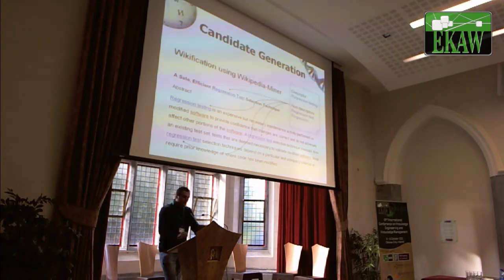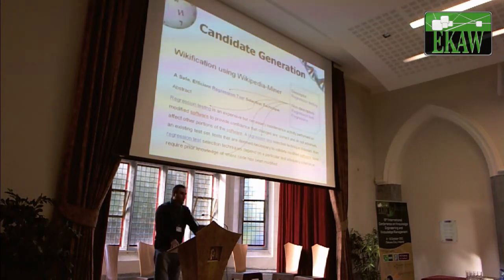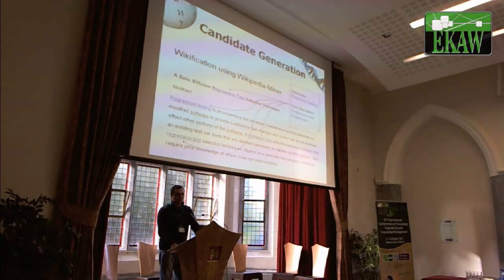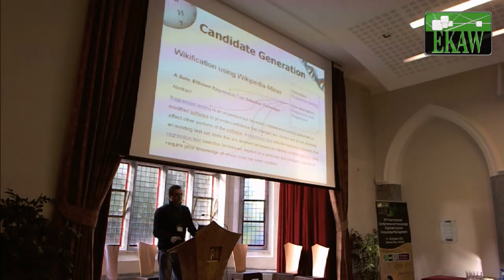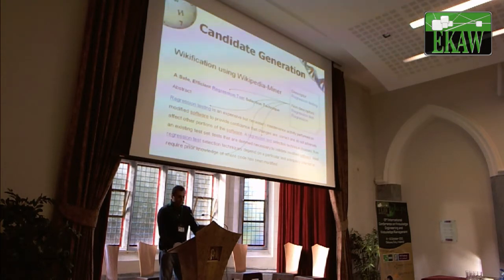The advantage of Wikipedia Miner is that it performs sense disambiguation — so in a document it would know whether it's talking about Java coffee, Java computer programming, or the island. It also allows us to measure the relatedness between two articles based on the links they share.